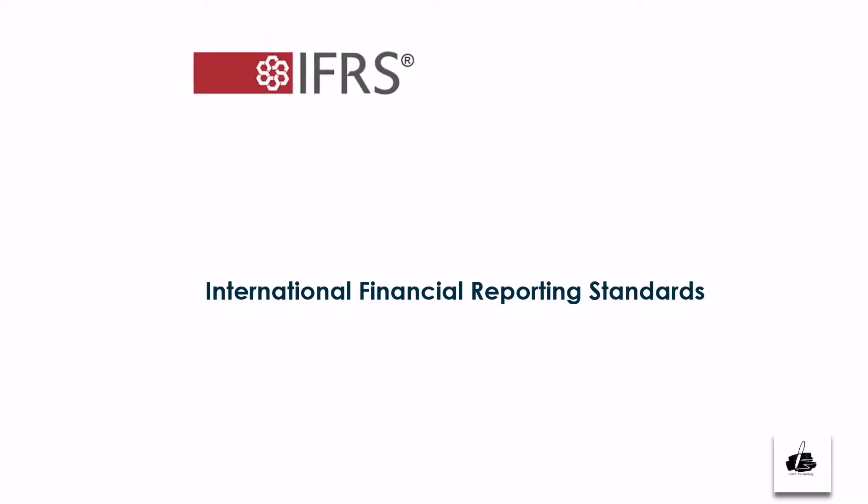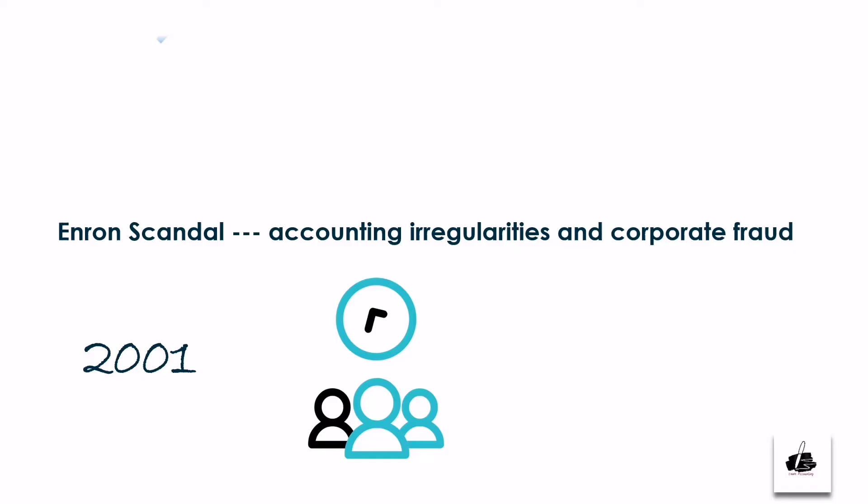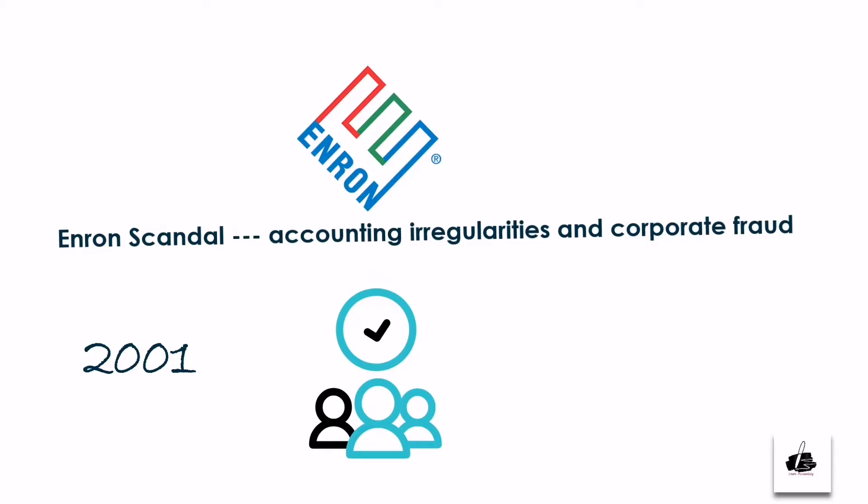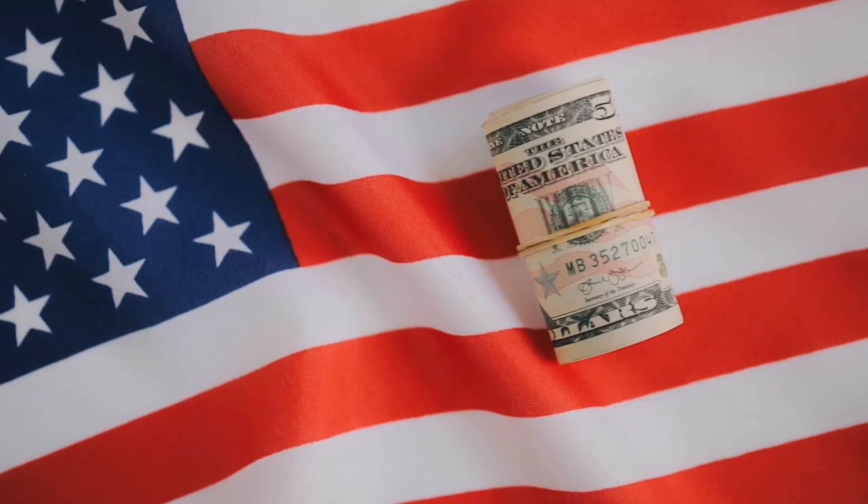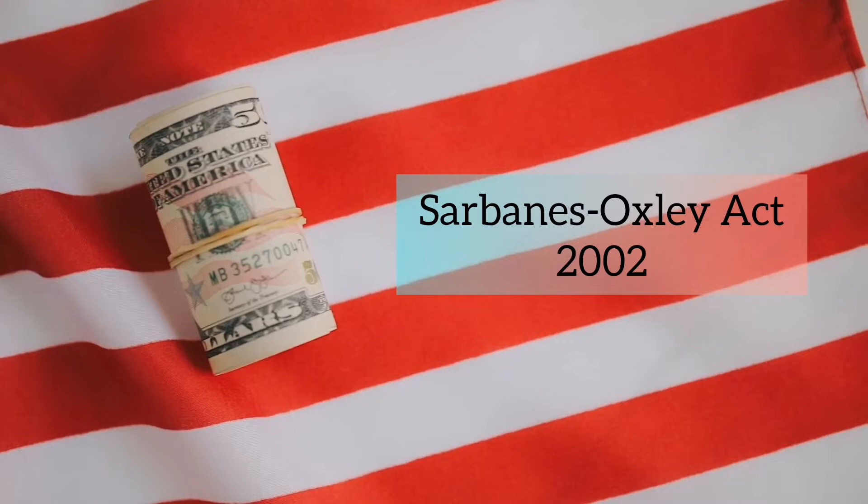In 2001, the Enron scandal revealed major accounting irregularities and corporate fraud, leading to increased scrutiny and calls for stronger accounting regulations and ethics. In 2002, majorly in response to the Enron scandal, the Sarbanes-Oxley Act was enacted in the United States to enhance corporate governance, internal controls, and financial reporting transparency.